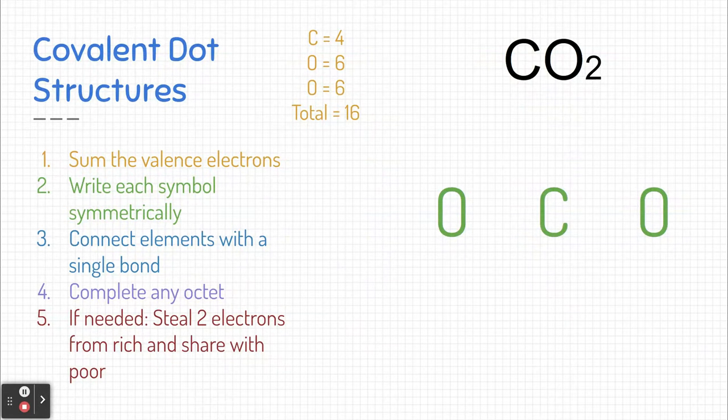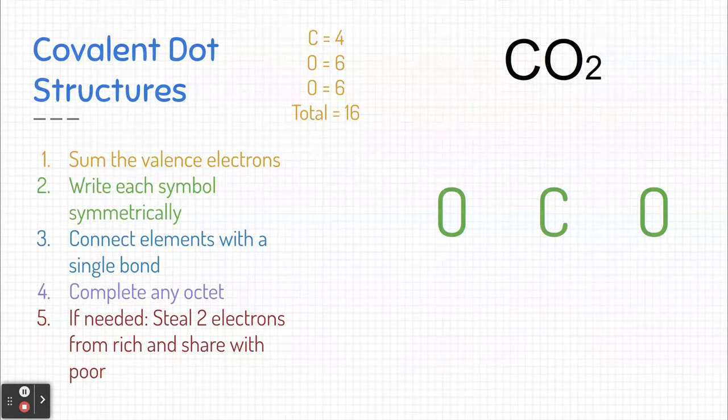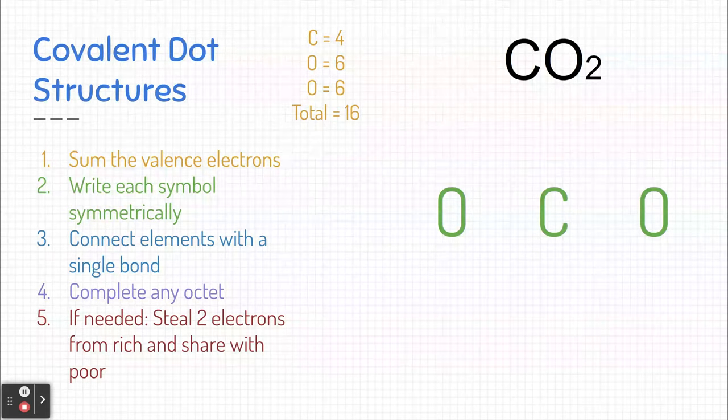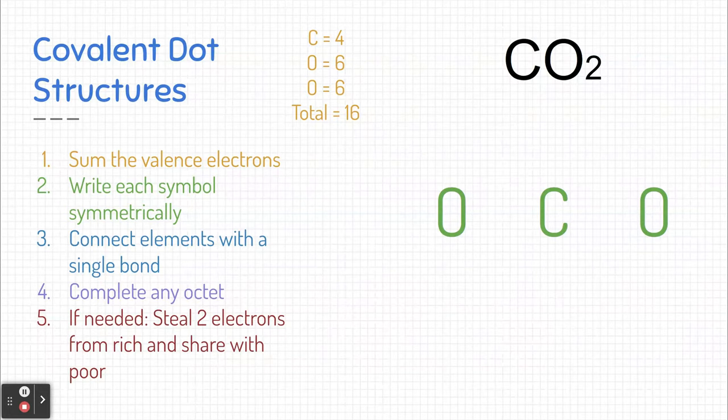Typically, a good rule of thumb is to try to be symmetrical. Elements, when they bond, usually try to make themselves somewhat symmetrical. So here we have oxygen, then carbon in the middle, and then oxygen on the other side. Step three says to connect the elements with a single bond. These elements are all connected, so let's at least put one bond between each of them.